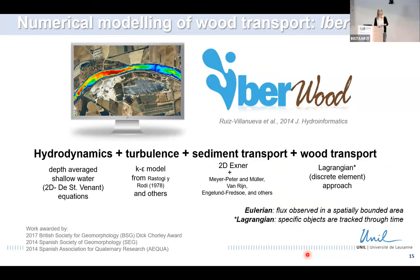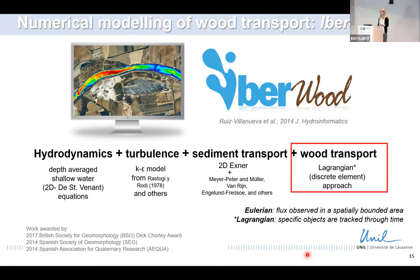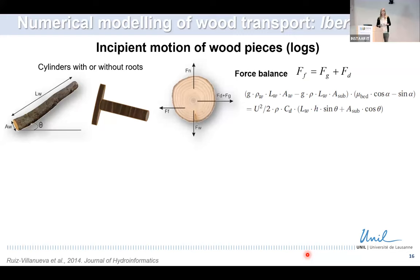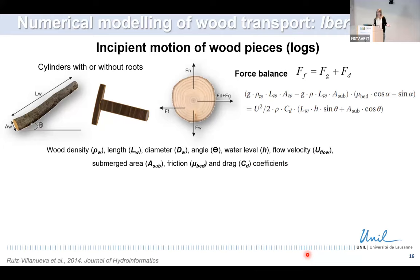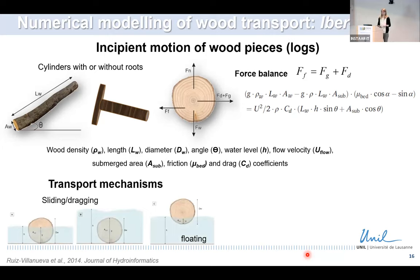A few years ago — already 10 years ago — we coupled a module to simulate the transport of wood, by coupling a Lagrangian scheme (a discrete element approach) to the Eulerian model. We simulate individual pieces of wood, and the incipient motion of these pieces, assumed as cylinders with or without roots, is based on a force balance between the driving forces — drag and gravitational forces — and the resisting forces, friction. The key parameters are wood density, size of the wood, water depth, flow velocity, and friction and drag coefficients. This gives two transport mechanisms: wood may slide or drag on the riverbed, or may float.